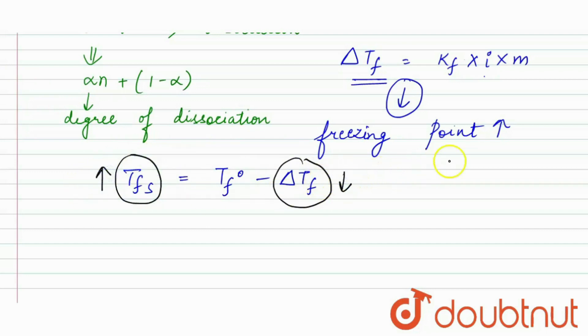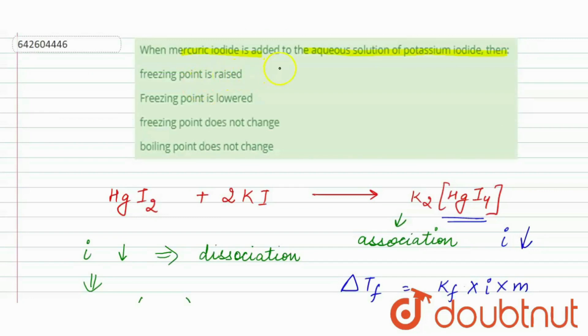So, in this reaction, our freezing point will be raised. So, our first option is when mercuric iodide is added to the aqueous solution of potassium iodide, then freezing point is raised. So, it is our correct option.